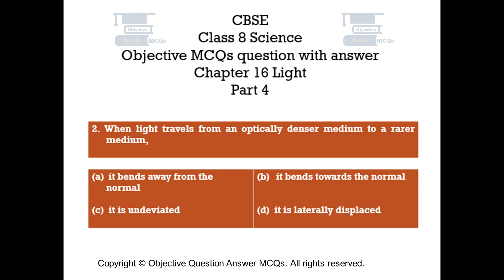Question number 2. When light travels from an optically denser medium to a rarer medium: Option A it bends away from the normal. Option B it bends towards the normal. Option C it is undeviated. Option D it is laterally displaced.